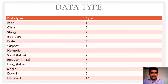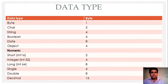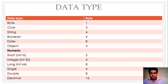So like any other programming language, the definition is same here. The type of data that we are going to use in our program is known as data types. VB.NET supports multiple types of data types.